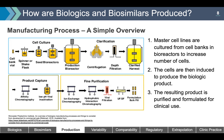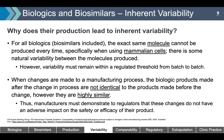How are biologics and biosimilars produced? A simplified description: master cell lines are cultured from cell banks and bioreactors to expand the number of cells. These cells are then induced to produce the biologic. The resulting product is purified and formulated for clinical use. Biologics and biosimilars have inherent variability — the exact same molecule cannot be produced every time. Specifically when using mammalian cells, there is some natural variability between molecules produced, because of post-translational modifications, primarily glycosylation of the proteins.